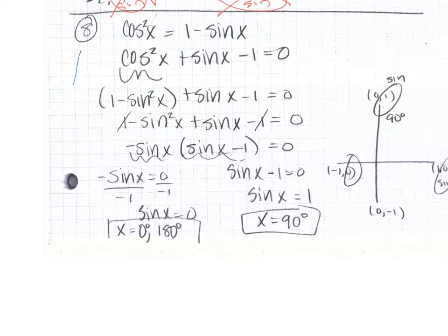So for number 8, you again want to get all terms on one side, so that's why we subtracted 1 and added sine x, and all terms are on the left side. You then see cos and sine. So because we see cos squared, we use our identities, and we can replace with 1 minus sine squared.